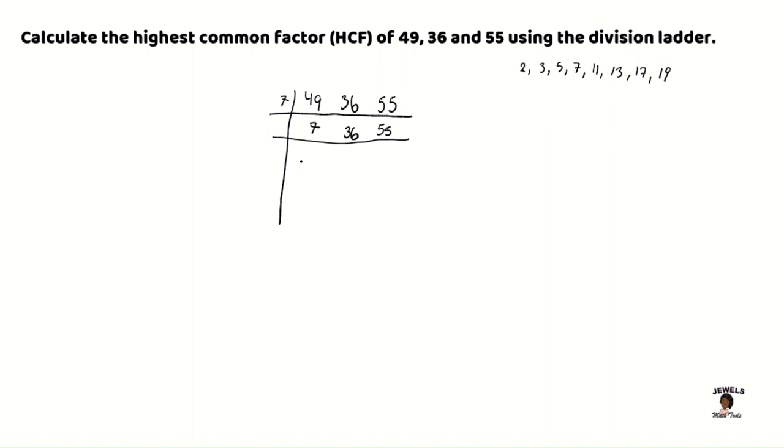Remember that whenever you're using the division ladder, there are no remainders in the division ladder. The number either has to divide out completely or we find another factor. So let's continue prime factorizing our numbers.